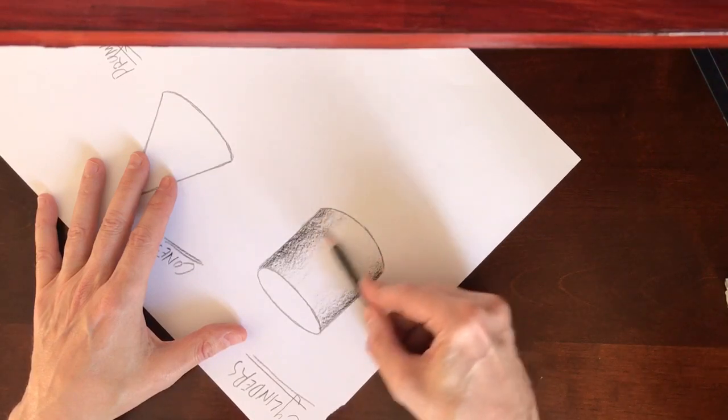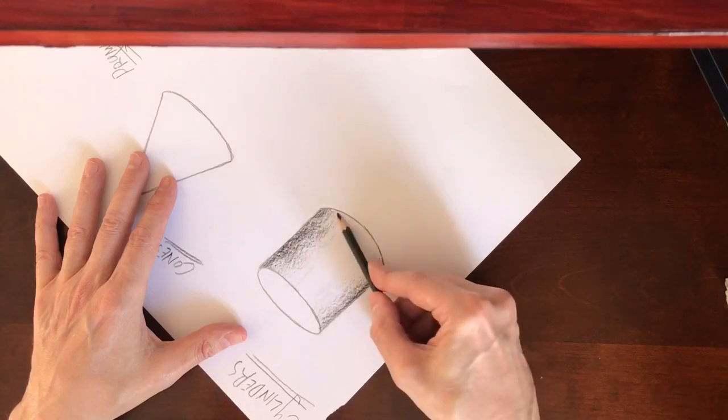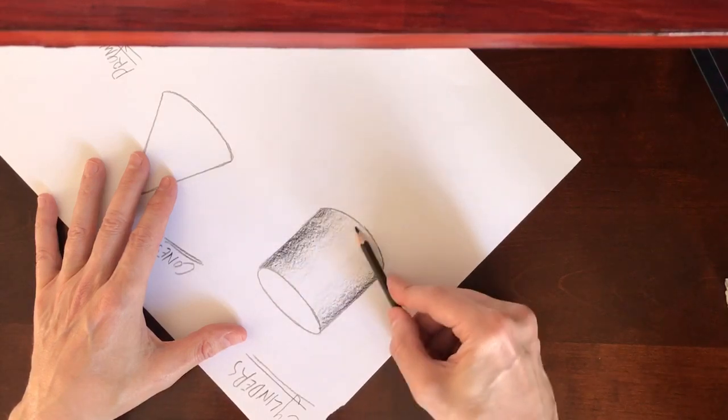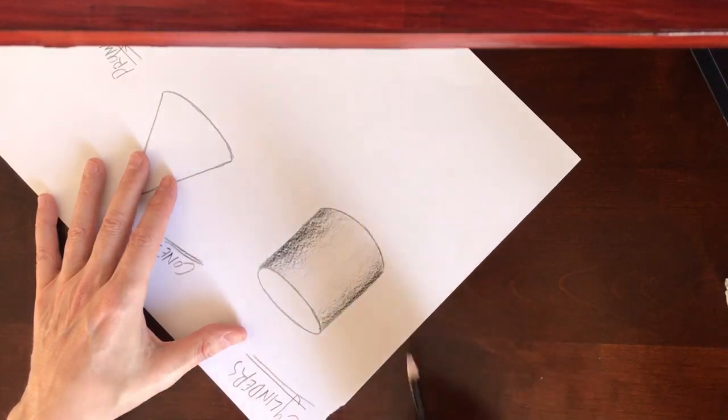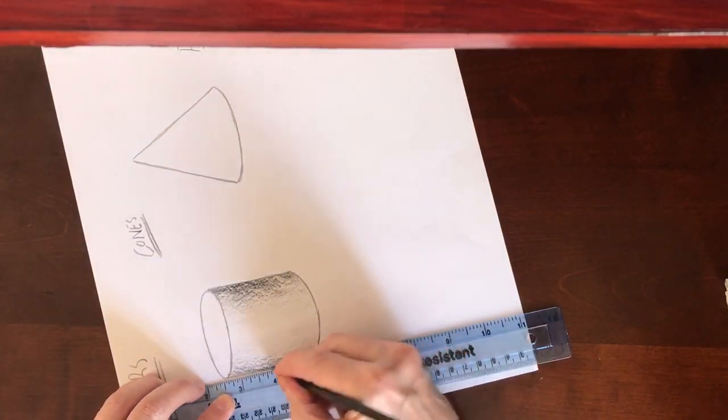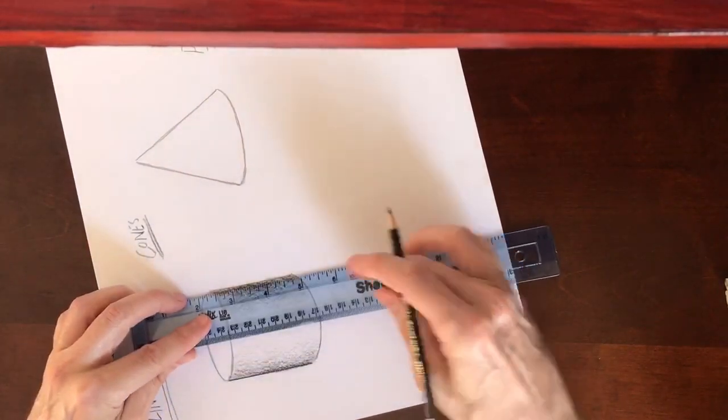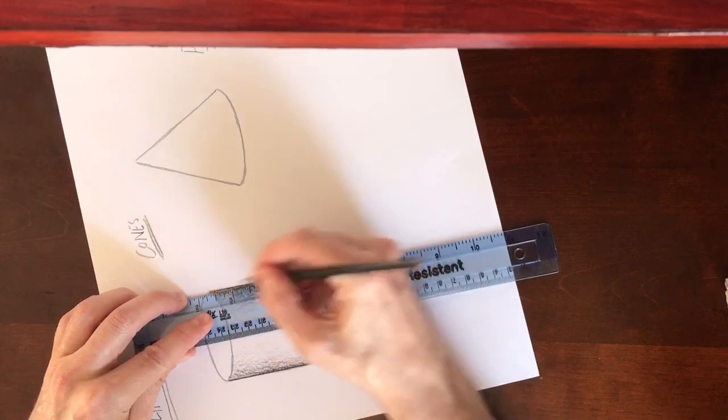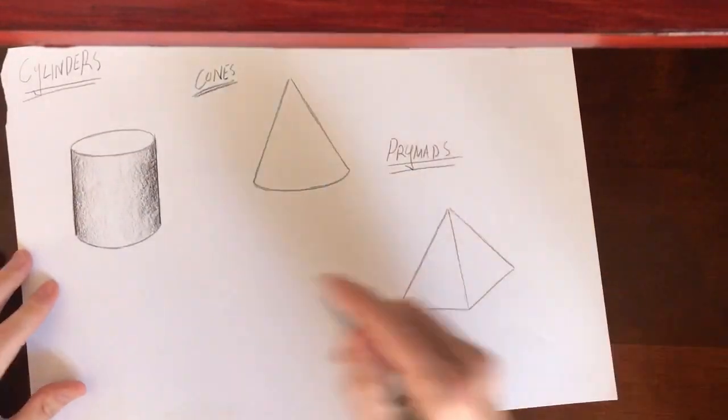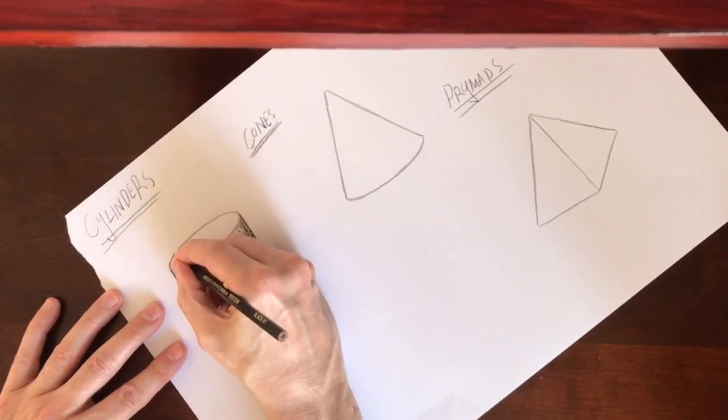Again, take some care to get it nice and even all the way along its length and get it to gradually change at the right rate. Once you've finished, get your ruler and outline it. You will notice the difference when you outline your rendered sketches. It really makes a big difference to how it looks.